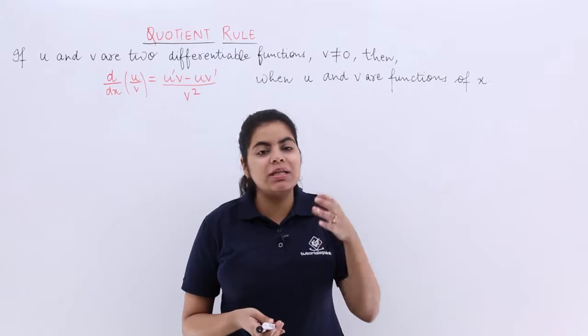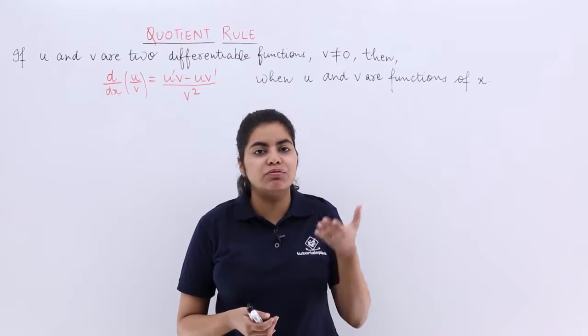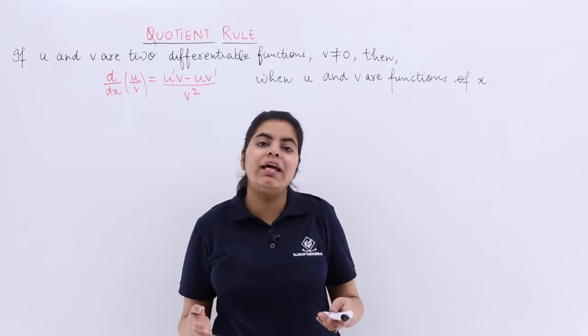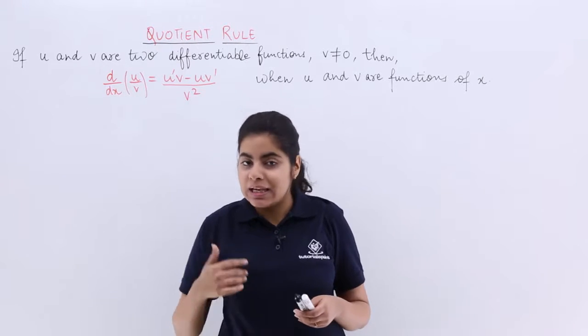You know that the quotient means the division. In case of division, suppose we have two functions - one function in the numerator, another function in the denominator, and you have to take the derivative of it or the differentiation you have to do. How to do it? Let's see.